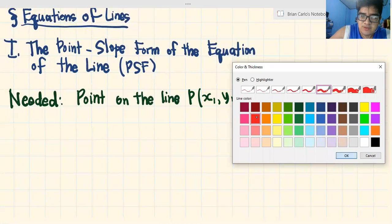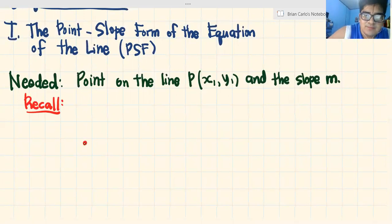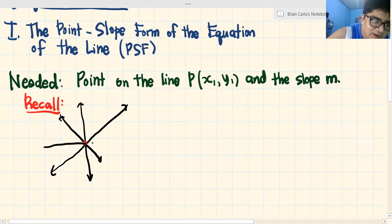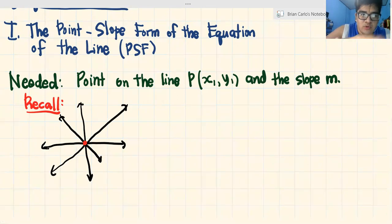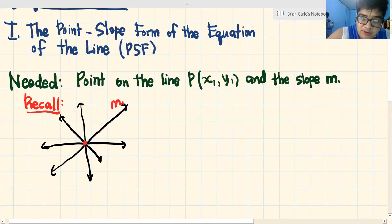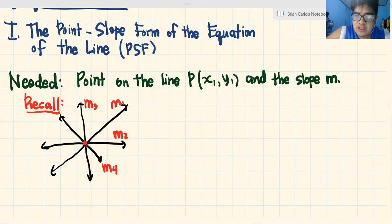I-recall muna natin. Naalala nyo, may given point tayo. Sabi ko dati, meron chances na maraming points ang dadaan dyan — maraming lines. May mga instances na maraming lines ang pwede dumaan dyan sa point na yan. Kaya kailangan natin na isang bagay para ma-differentiate lahat ng mga lines na yan. And what is that? That's what we call the slope. Yun yung nag-differentiate na nagsasabi ng kung ano ang specific na line — halimbawa, itong line na to may slope na M1, itong isa may M2, M3, M4. Bawat isang line na present dyan, may tiging isa silang unique na slope.